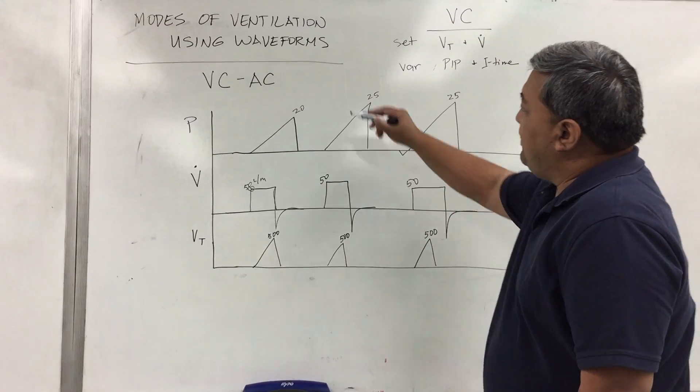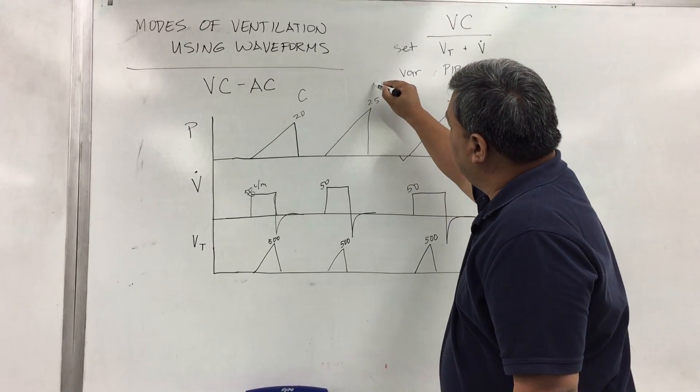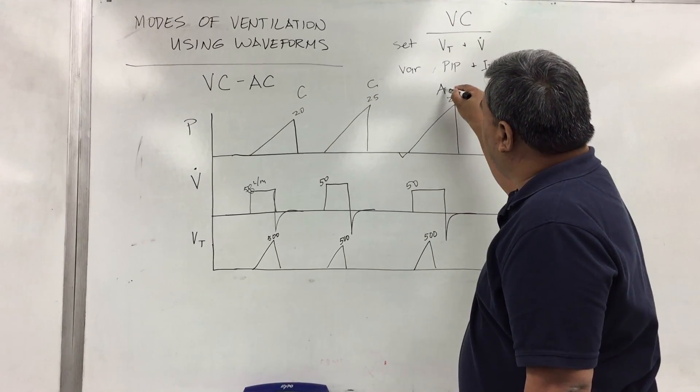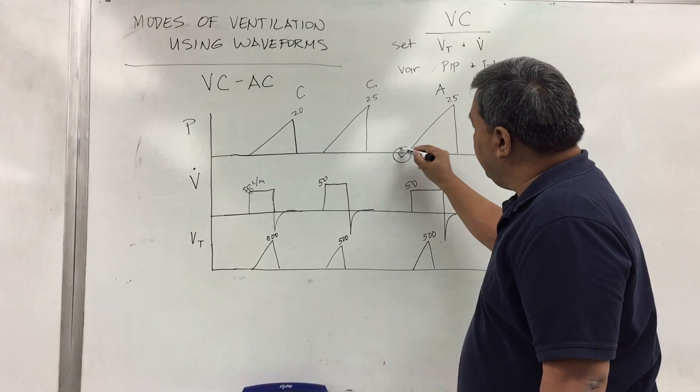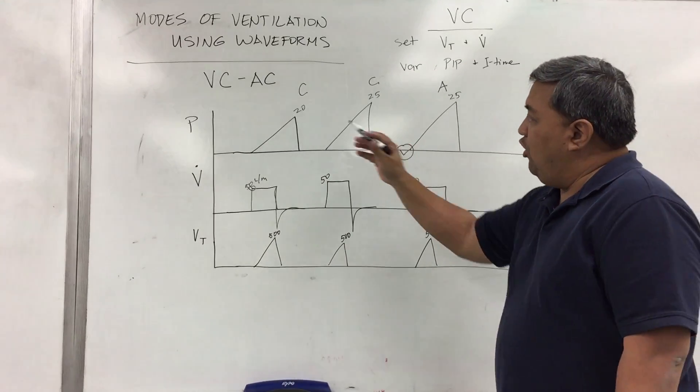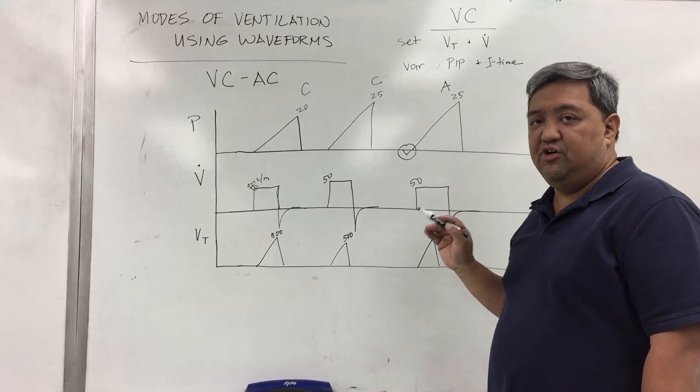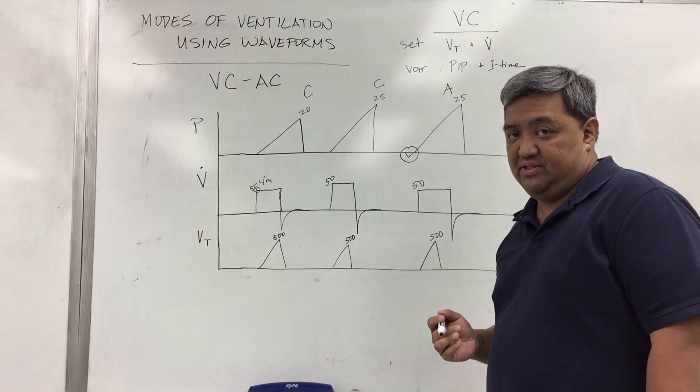So the main difference between a controlled breath and an assisted breath is the negative inflection. Although all three are considered mechanical breaths or mandatory breaths.